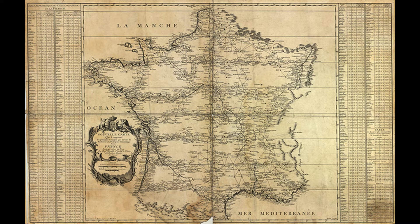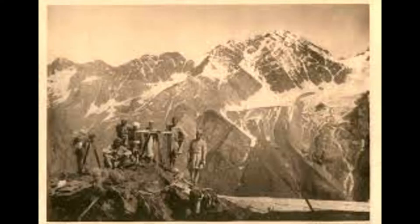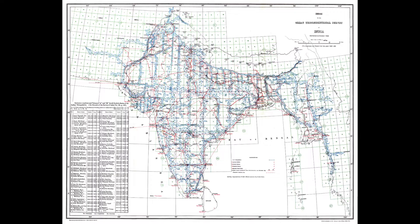Between 1683 and 1740, the Cassini family conducted extensive triangulation surveys in France, leading to the first accurate map of the country. Starting in 1802, the Great Trigonometric Survey of India measured the entire Indian subcontinent with high precision — a monumental task that took over 70 years to complete.